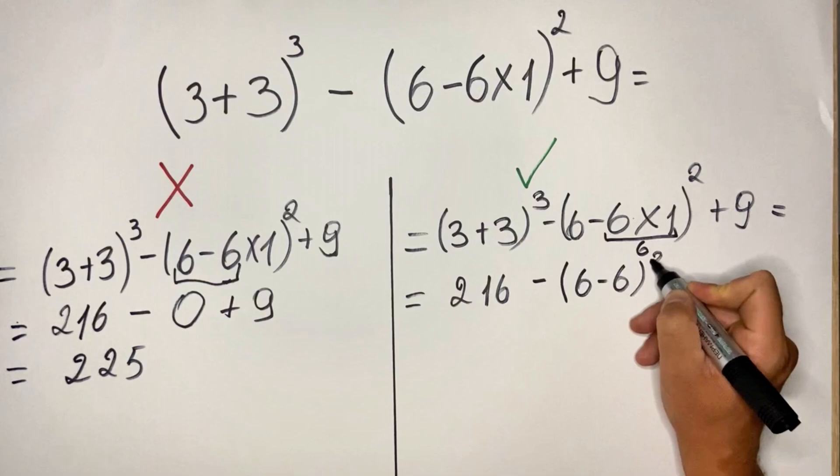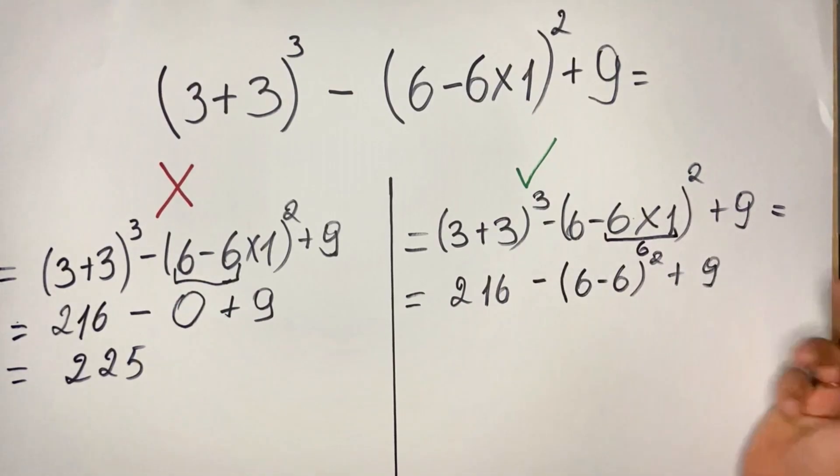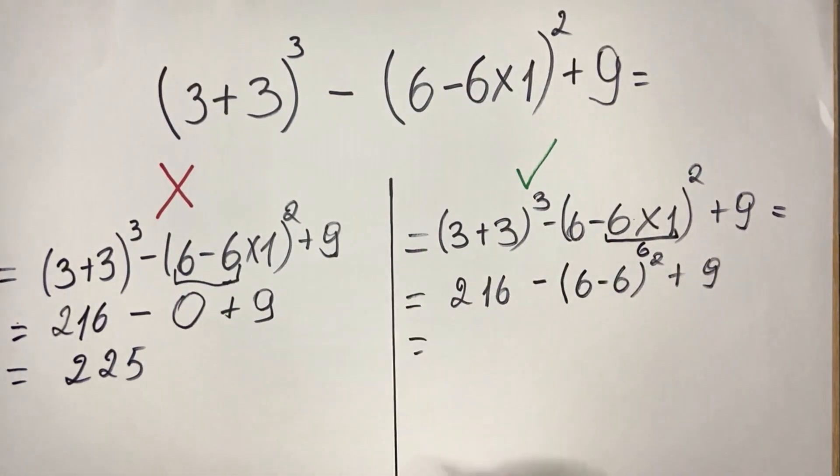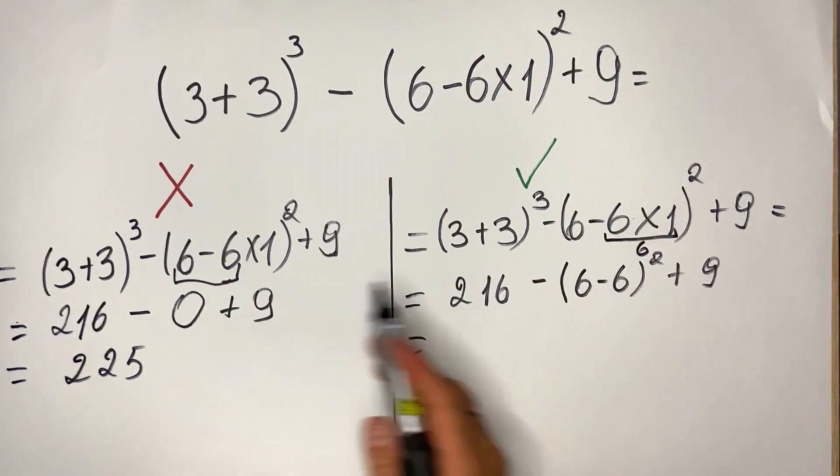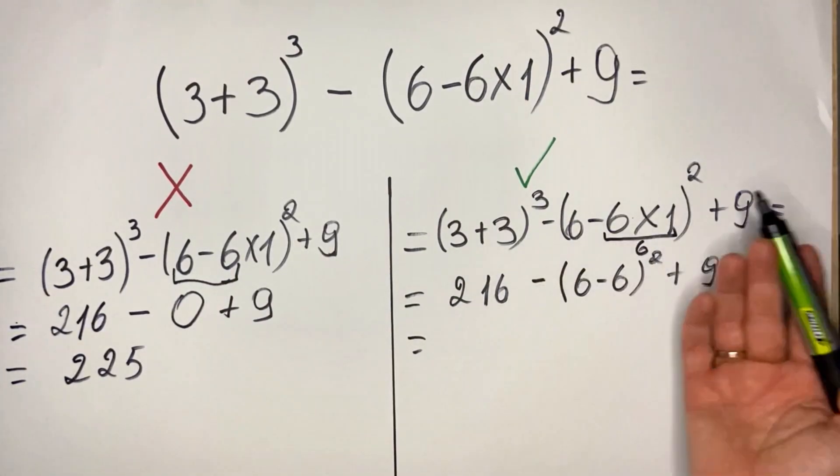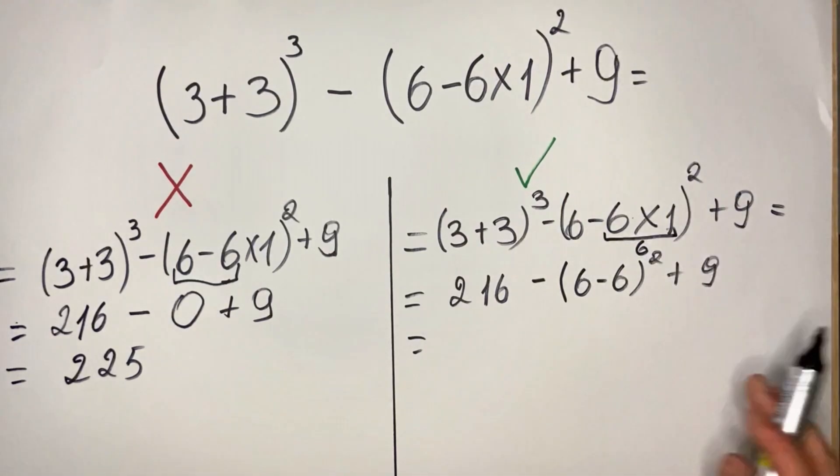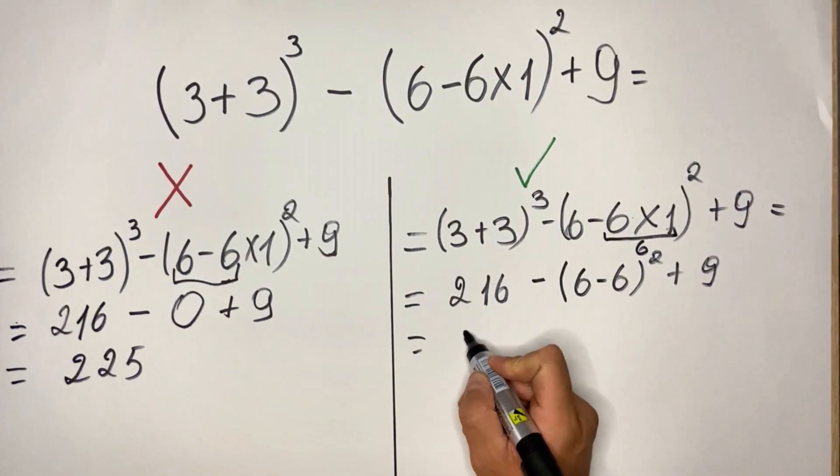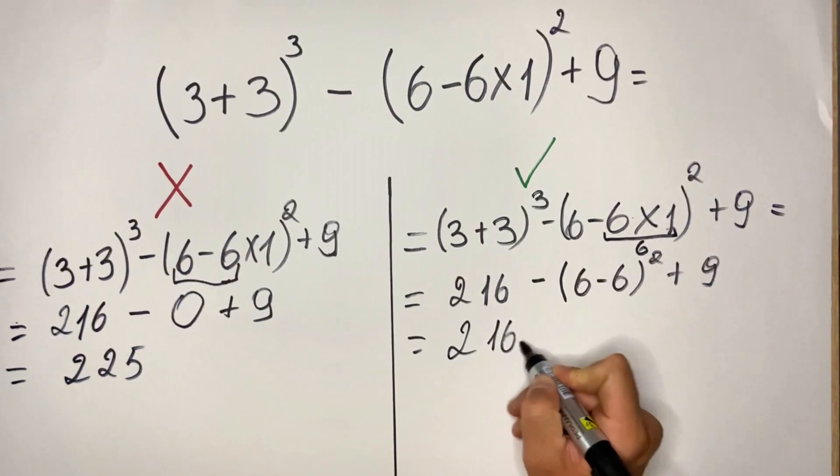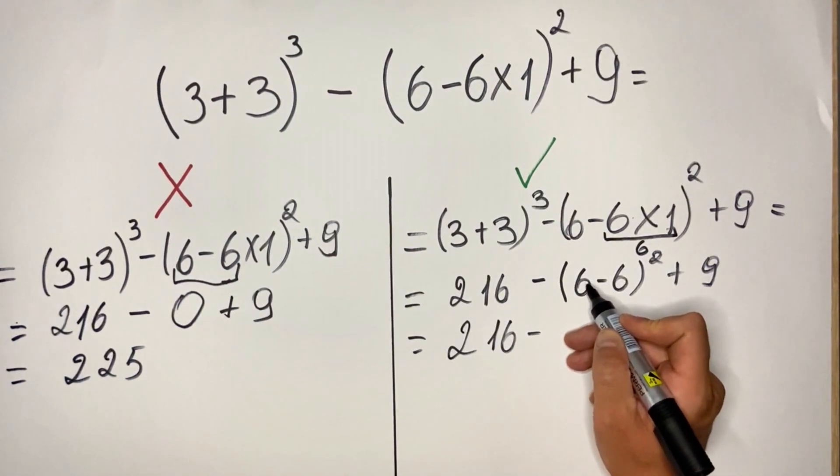And as mentioned here as well, we can all see it will be the same result, but the approach—this is the correct approach. Because here instead of 1 could be 5, then of course the number will be different. So here we have 216 minus, here we have 0, 6 minus 6.